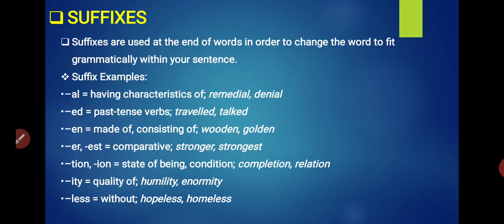ER or EST. These are two suffixes that we use in comparative degrees. When we compare two or more things, we use these suffixes, like strong becomes stronger, strongest. Next is TION, SION. This means state or condition of being. Words formed are completion, relation. Next is ITY. ITY we use when we want to express the quality of something in a word, like humility, enormity. Next is LESS. Less means without, like hopeless, homeless - without hope or without home.